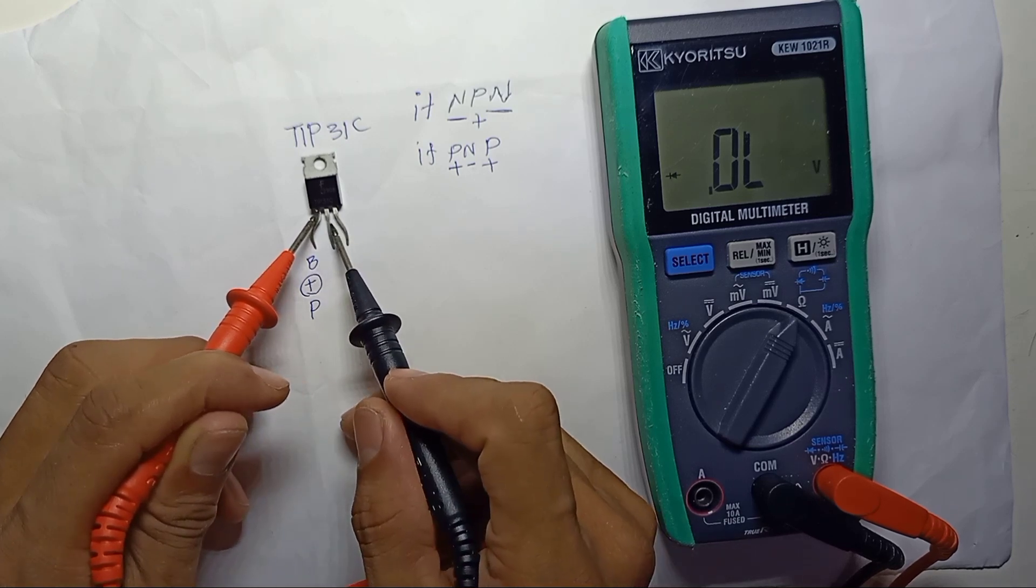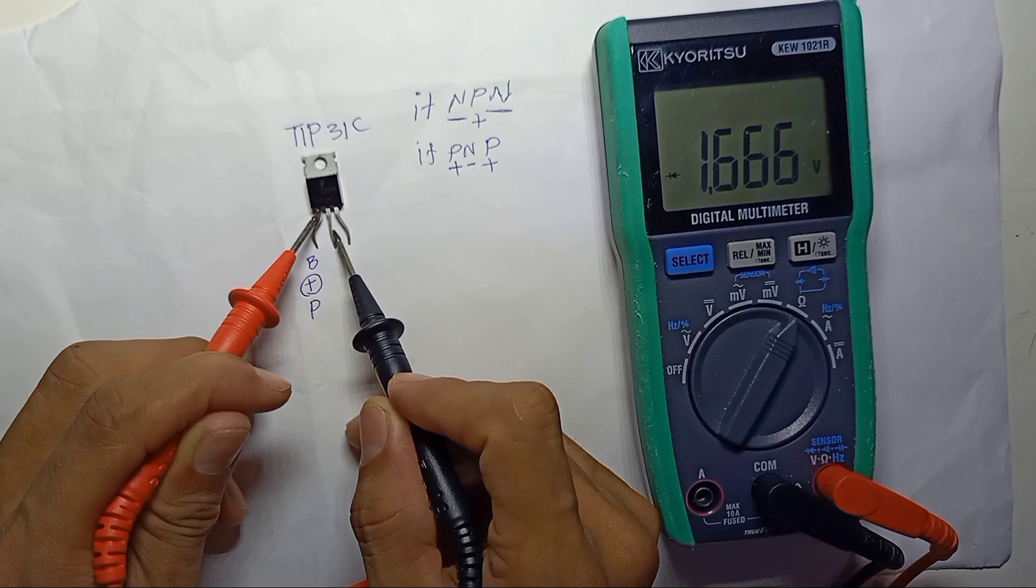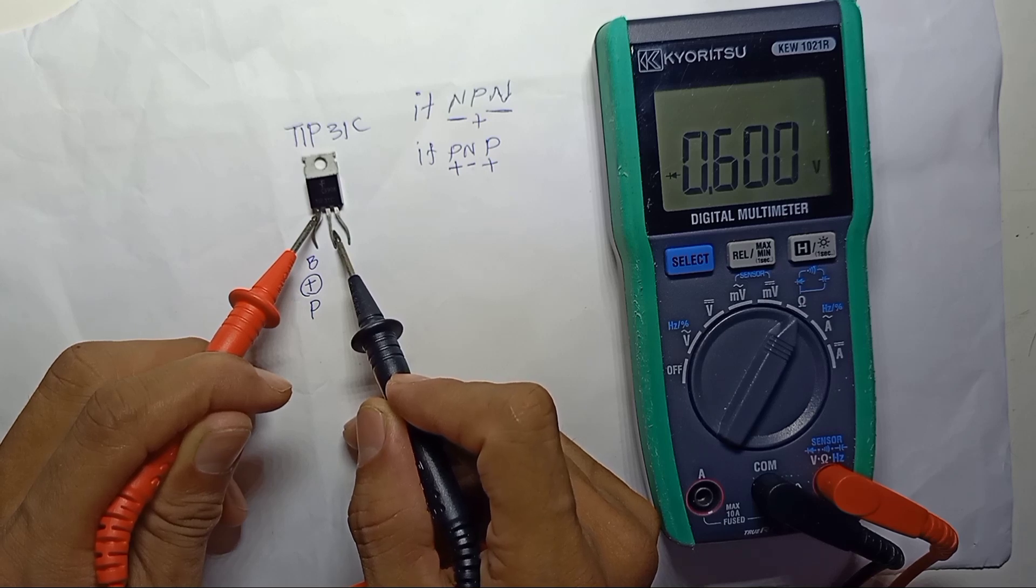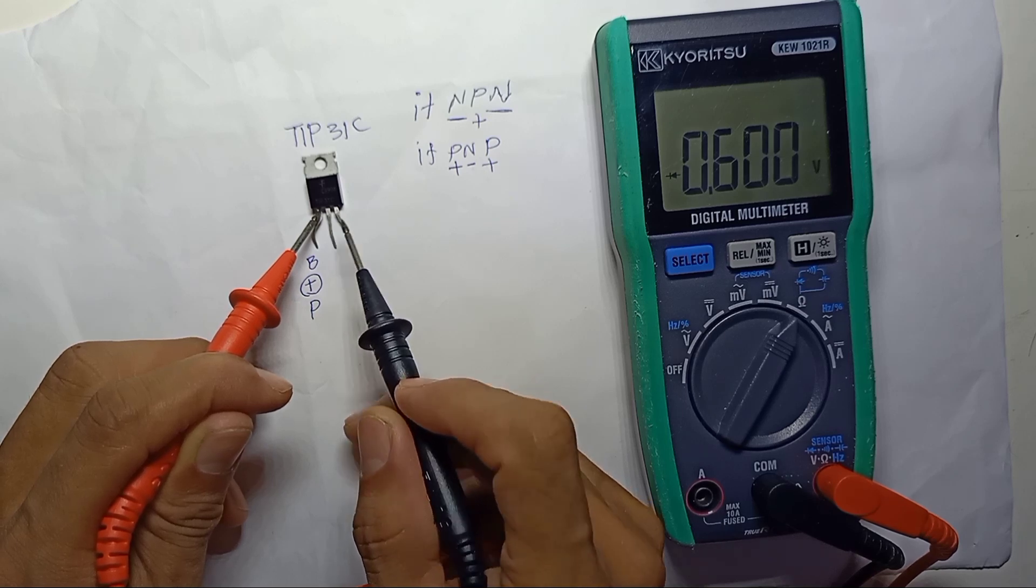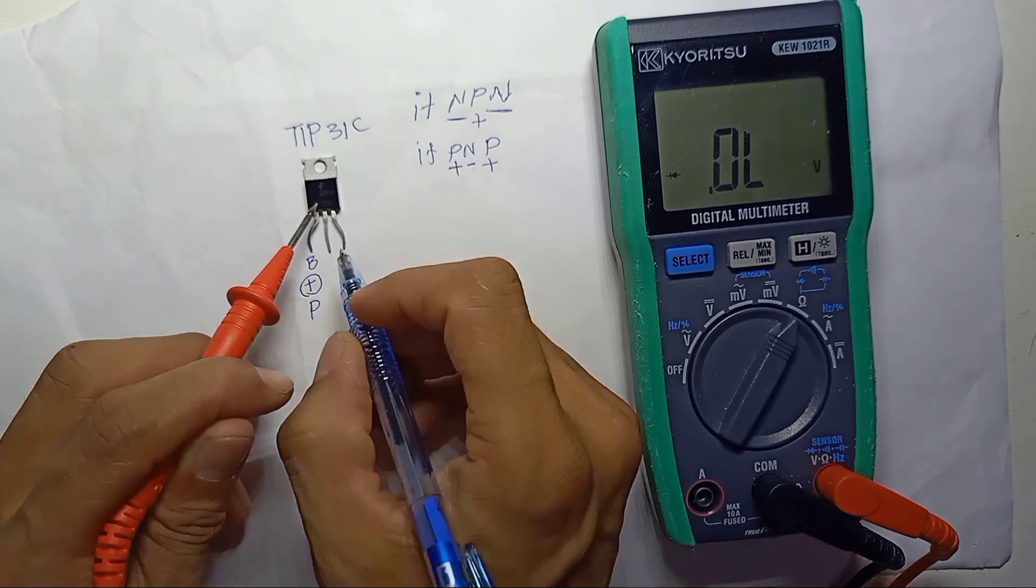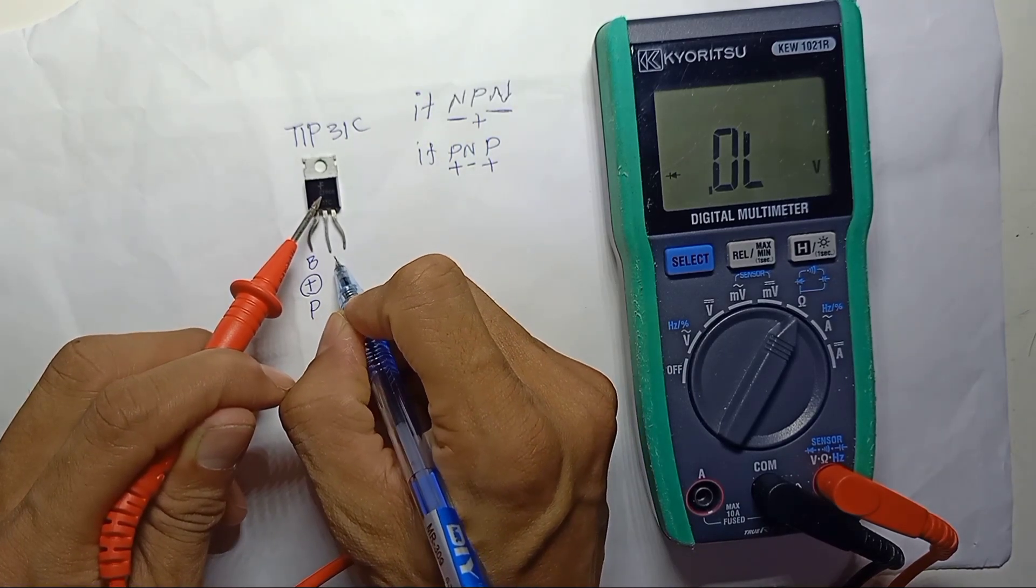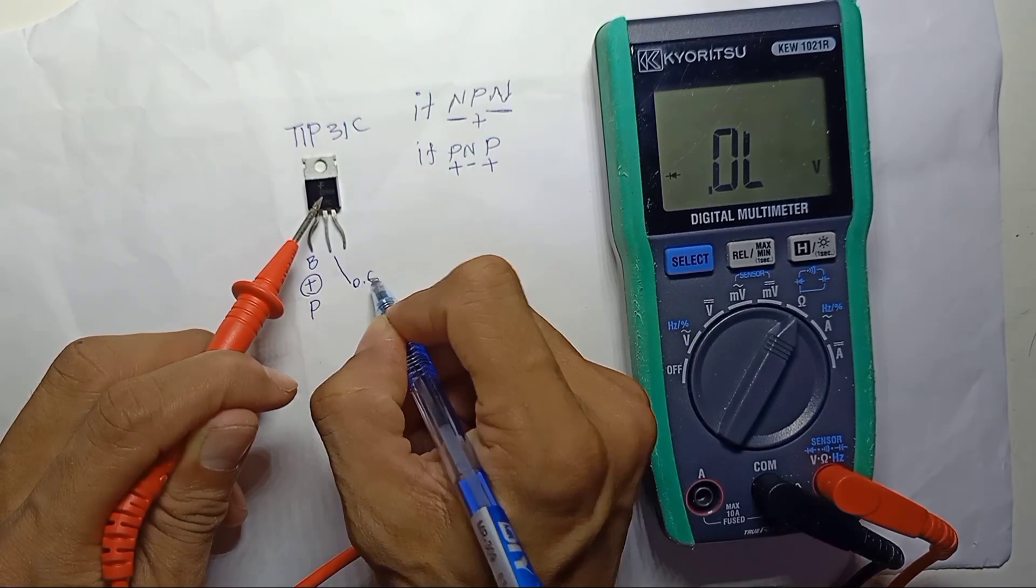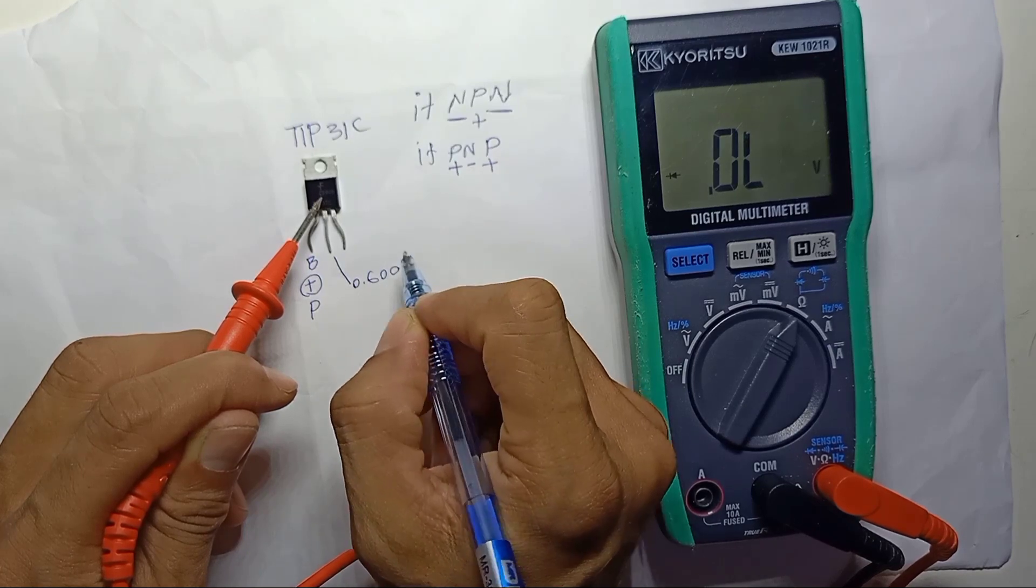So base to second pin, diode voltage drop, 0.600. Here, this pin is 0.600 voltage drop.